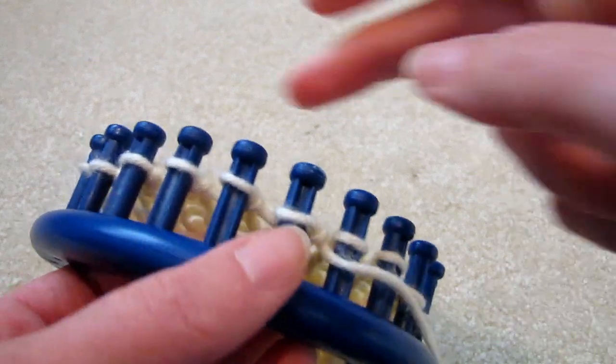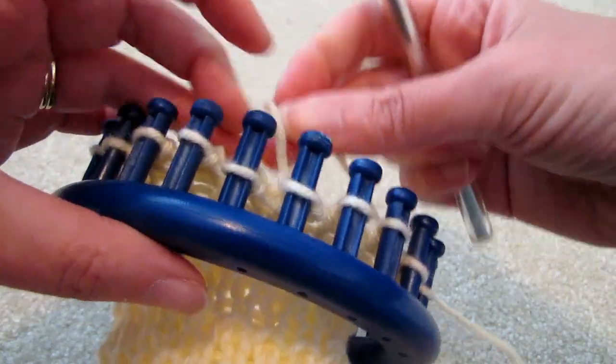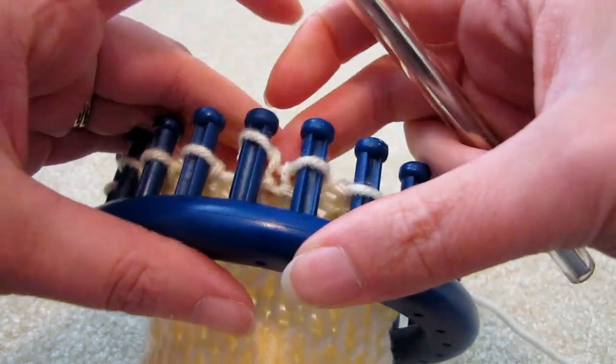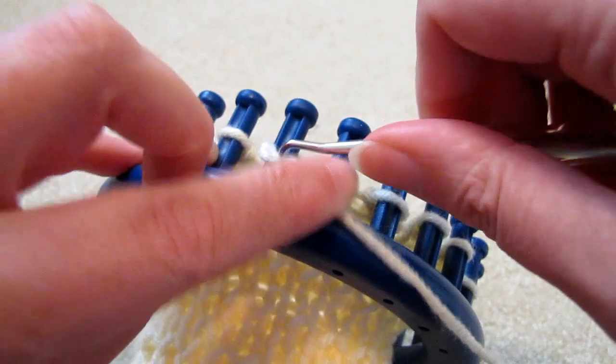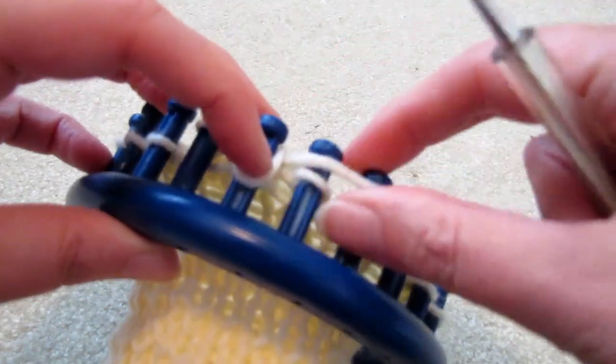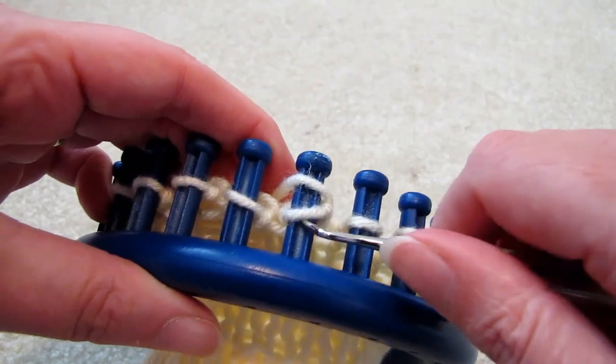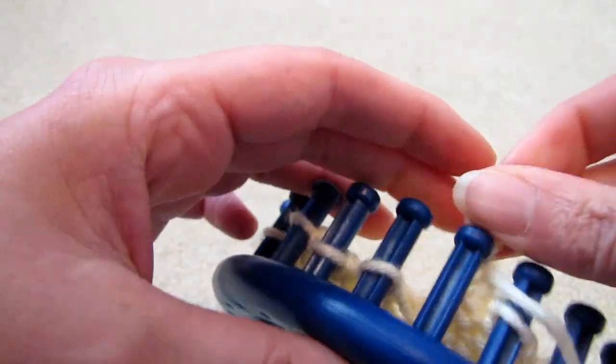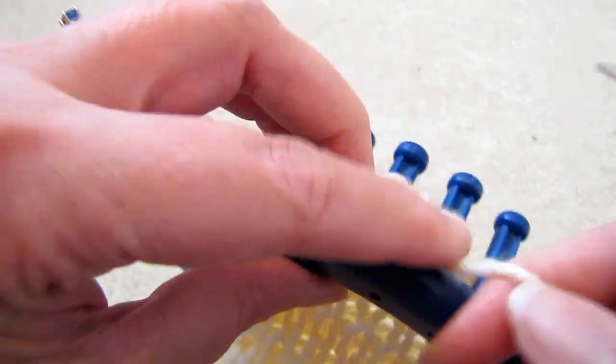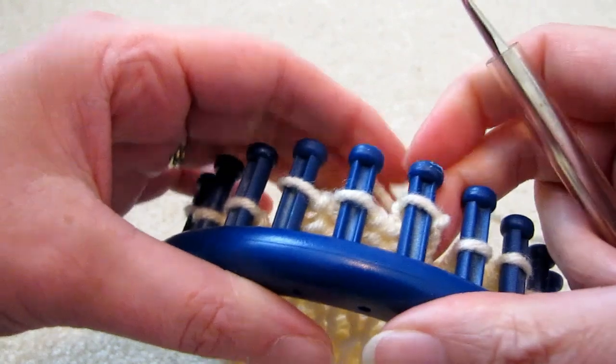And from here on we'll go back and forth on these three pegs four times going back in the knit stitch. One, two, and three. So that was the first combination. The second combination of one, two, and three purl stitches. And going back in the knit stitch. And the fifth and last series of three times purl.